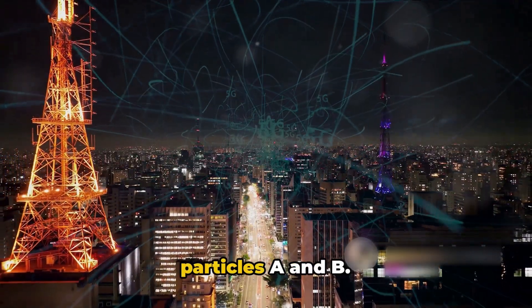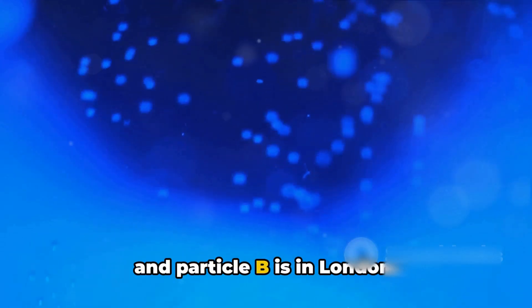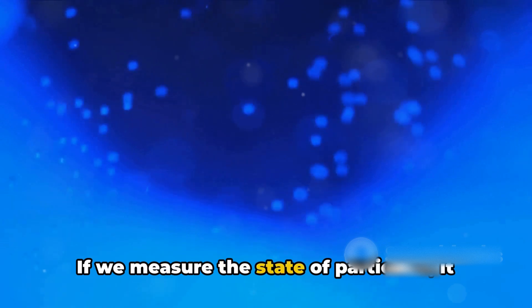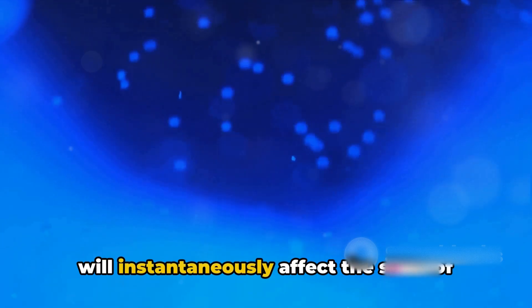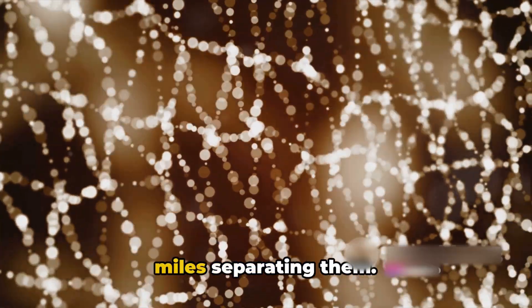Imagine two entangled particles, particles A and B. Now let's say particle A is in New York and particle B is in London. If we measure the state of particle A, it will instantaneously affect the state of particle B, regardless of the thousand miles separating them.